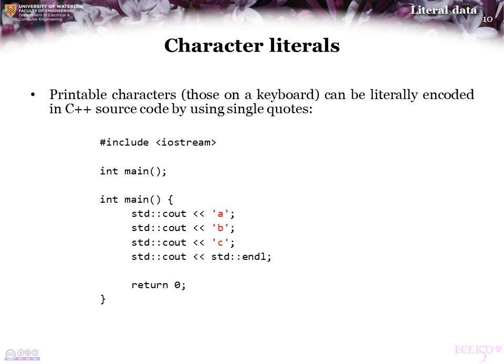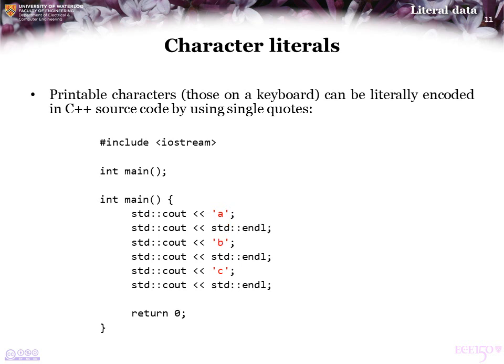Printing characters — those that appear on your ASCII keyboard — can be literally encoded in your C++ source code by using single quotes. For example, we would print to the console the character A, then B, then C, and then an end-of-line character. If we were to print an end-of-line character after each of those characters, the output would appear as A followed by a new line character, then B, and so on.